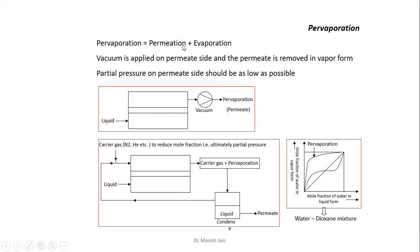Pervaporation is the combination of two processes: permeation and evaporation. In this process, we combine the membrane-based permeation process with evaporation. This is a specific type of membrane-based process where phase change occurs during the separation.